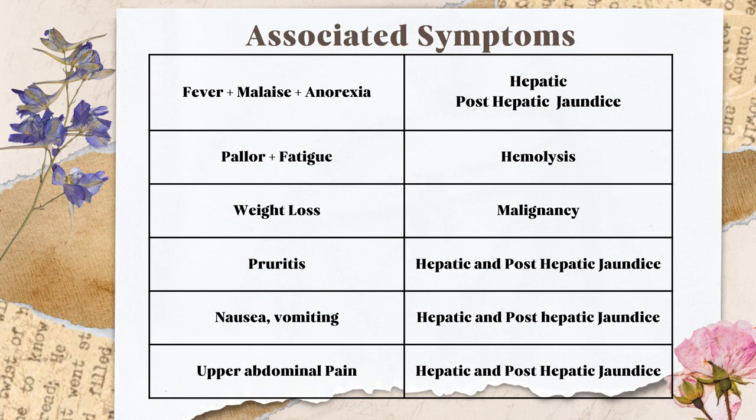Pruritus is a very important associated symptom in the history of jaundice. Deposition of bile acids can cause intense itching, indicating hepatic and post-hepatic jaundice. If a patient has jaundice and intense pruritus, especially if female, the presentation is most likely primary biliary cholangitis — mild jaundice with severe pruritus is pathognomonic. Nausea and vomiting also point to hepatic and post-hepatic jaundice. Upper abdominal pain similarly indicates hepatic or post-hepatic causes such as cholelithiasis, choledocholithiasis, CA head of pancreas, biliary carcinoma, or hepatitis.